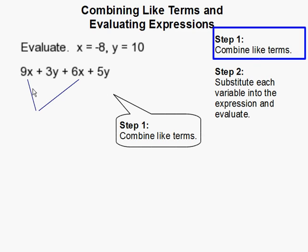It's much easier to simplify our expression before substituting the values for our variables. So 9x and 6x are like terms since they have the same variable. We simply add the coefficients 9 and 6 that gets us 15x.